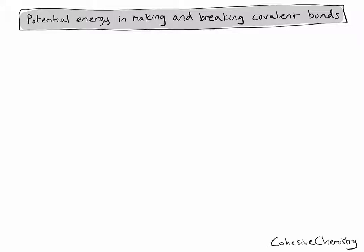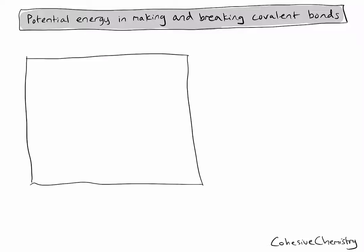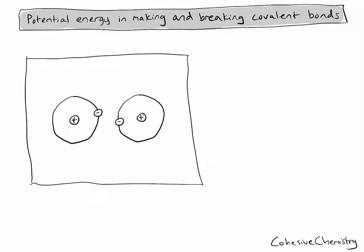In order to explain potential energy in this context, it's going to be useful to take an example. So here's a box, and in it I'm going to draw two hydrogen atoms. Here's the first one, and you can see I've drawn my hydrogen atom with one proton in the middle, or the nucleus, and one electron orbiting around in a shell or energy level. Here's the second atom, and in this example, these two hydrogen atoms are my system.